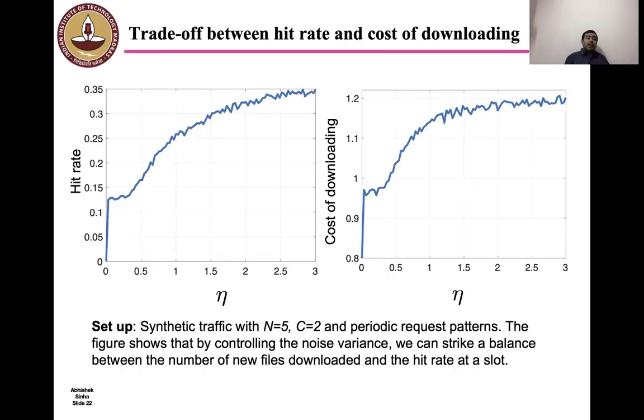Note that in our analysis, we didn't associate any cost with downloading new files from the remote server to the cache. Obviously, this is a strong assumption. To study the effect of the number of new downloads versus hit rates, in the next experiment, we generate a synthetic periodic traffic with the library of size 5 in the single cache setting with cache capacity 2. Clearly, from the figures, the average number of new downloads increases with increasing the AWG noise level η. The plots show that by controlling the variance of added noise, we can strike a nice balance between the cost of downloading and the hit rates.